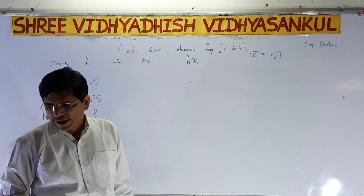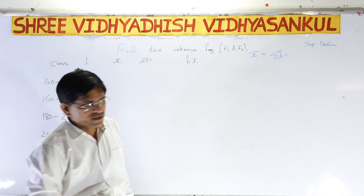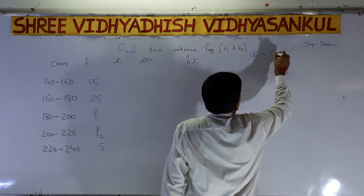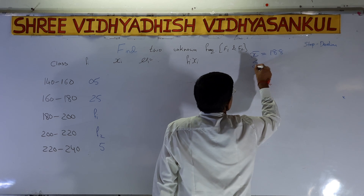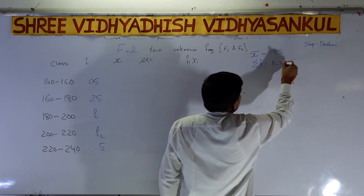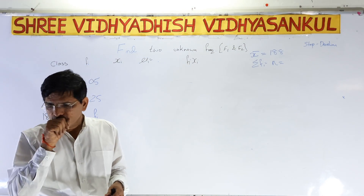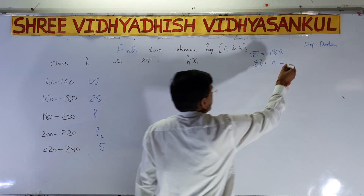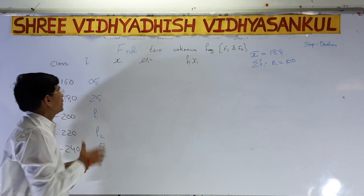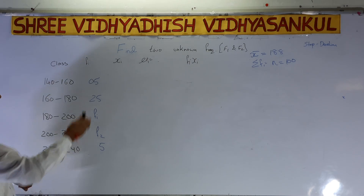For the second example, the classes are 140–150, 150–160 (wait — actually 140–160, 160–180, 180–200, 200–220, 220–240). The frequencies are 5, 25, f1, f2, and 5. What is given: x-bar = 188, and sigma fi (or N) = 100. We have to find the two unknown frequencies f1 and f2. First step: find xi.